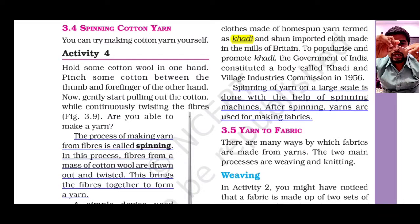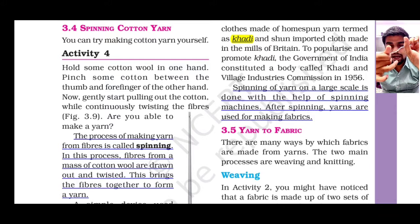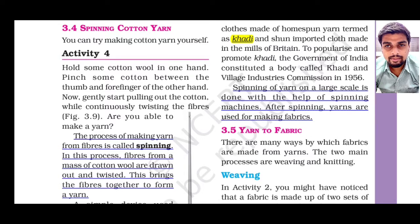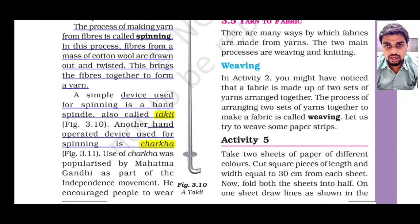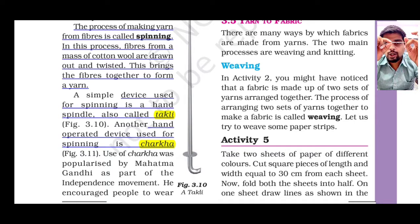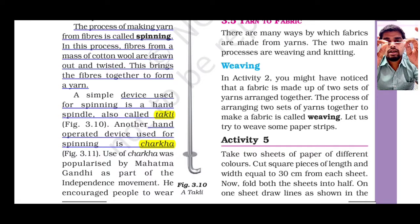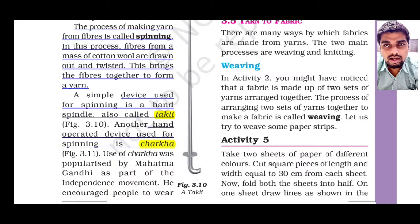We already saw in part 1 how to separate fibers from yarn; now we are making yarn by combining different fibers. The process of making yarn from fiber is called spinning. In this process, the cotton fibers are drawn out and twisted.